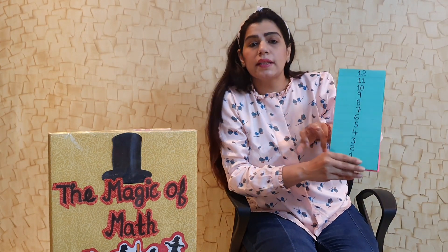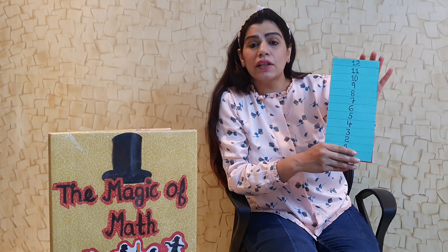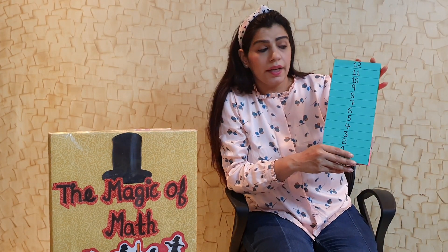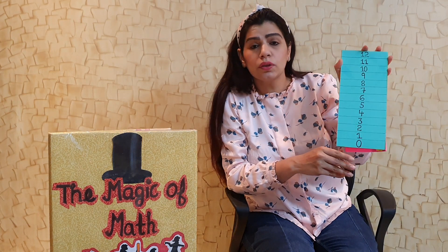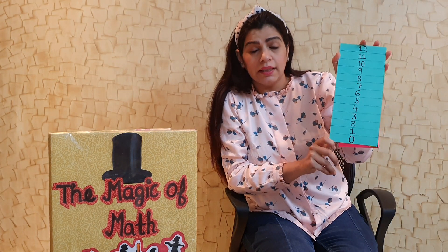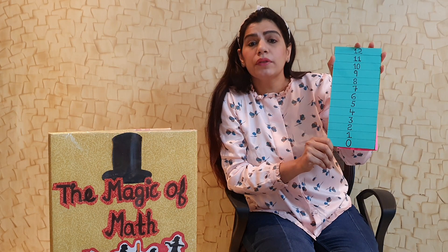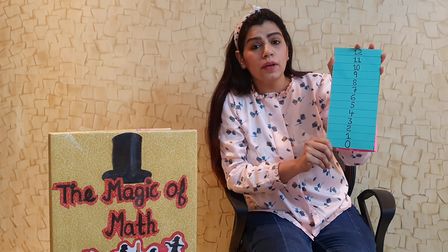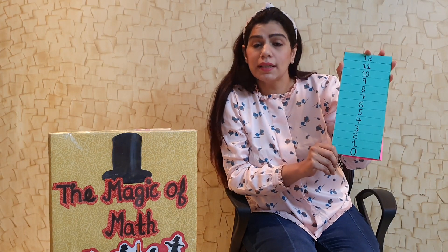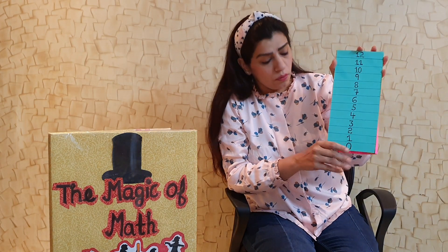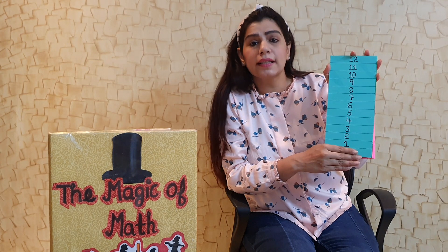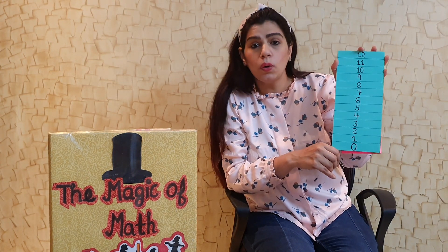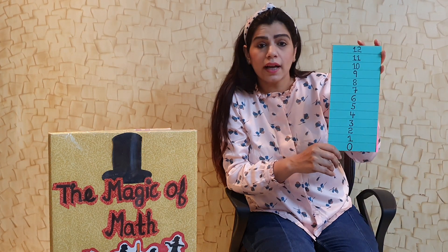These numbers starting from 1 are known as natural numbers — prakritik Sankhyama. If I add 0 to this collection, the numbers starting from 0 — 0, 1, 2, 3, and so on — are known as whole numbers, that is Puran Sankhyama. So starting from 1 gives natural numbers, and starting from 0 gives whole numbers.